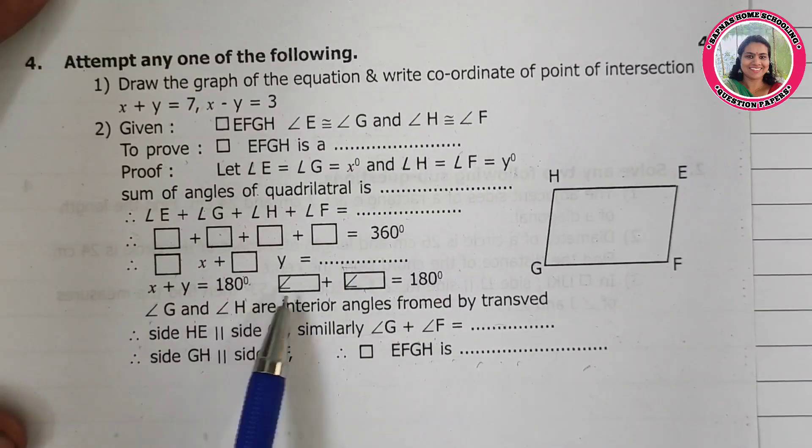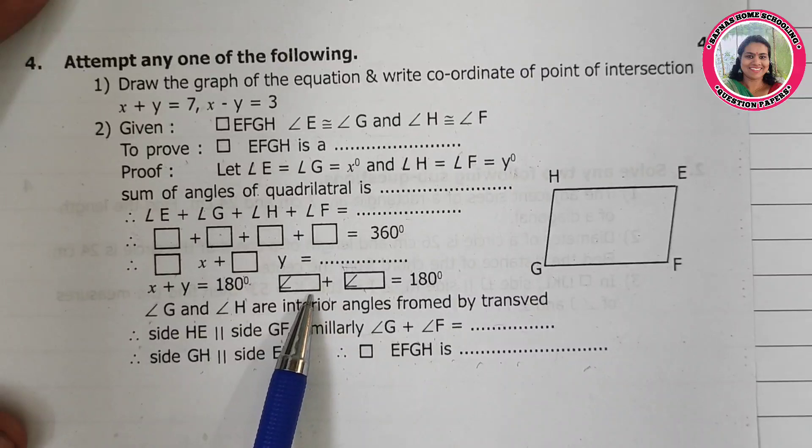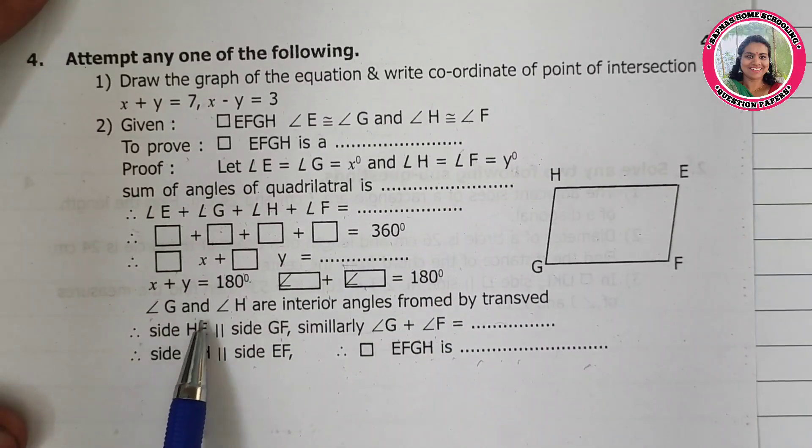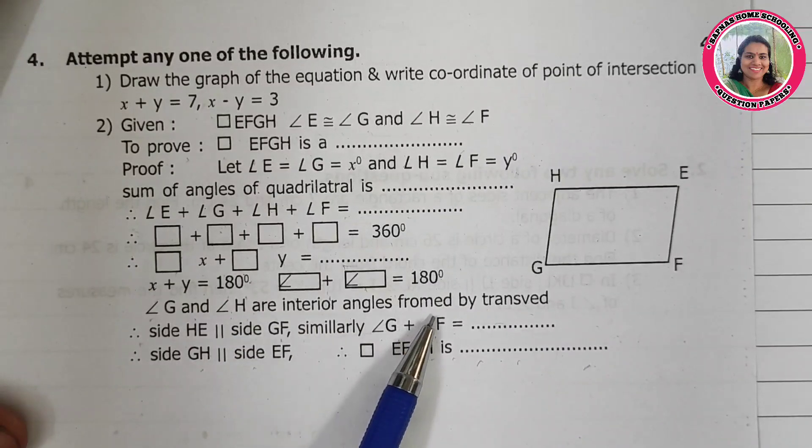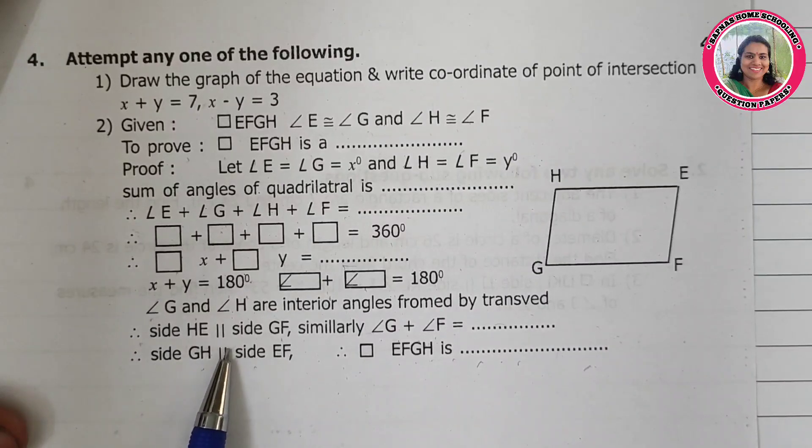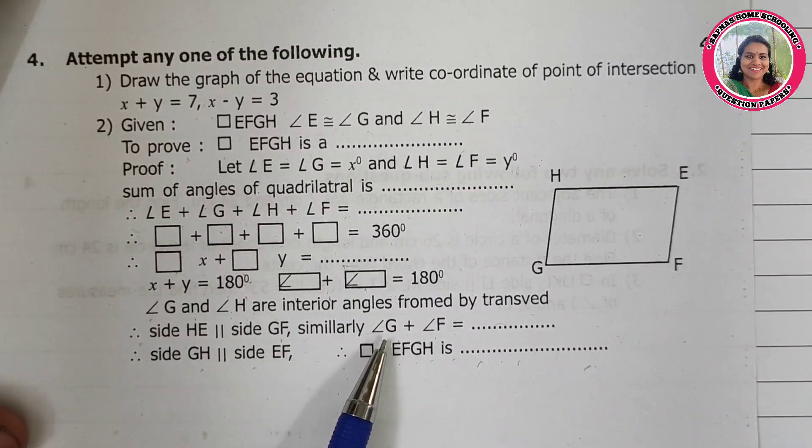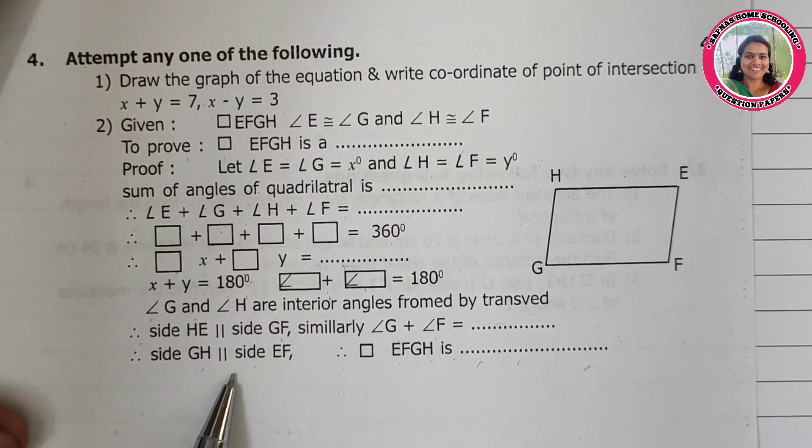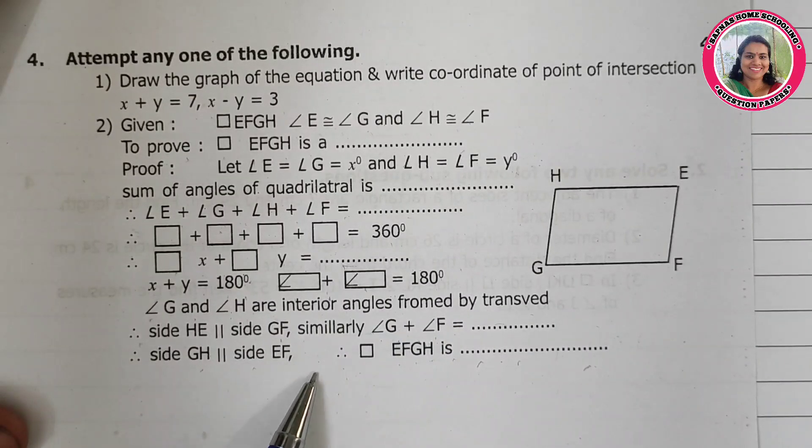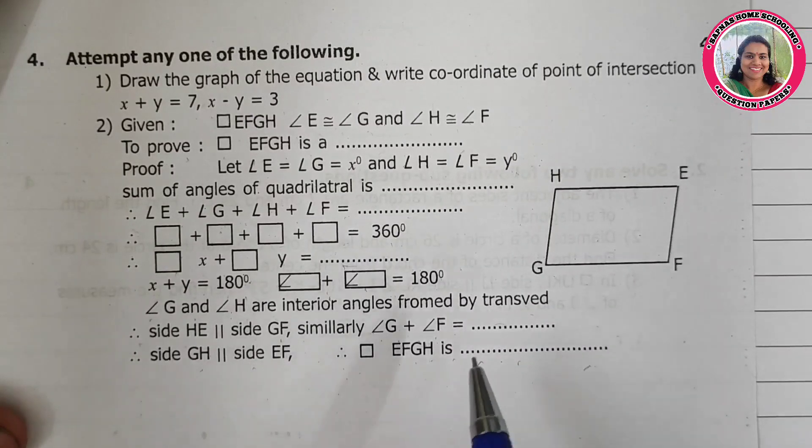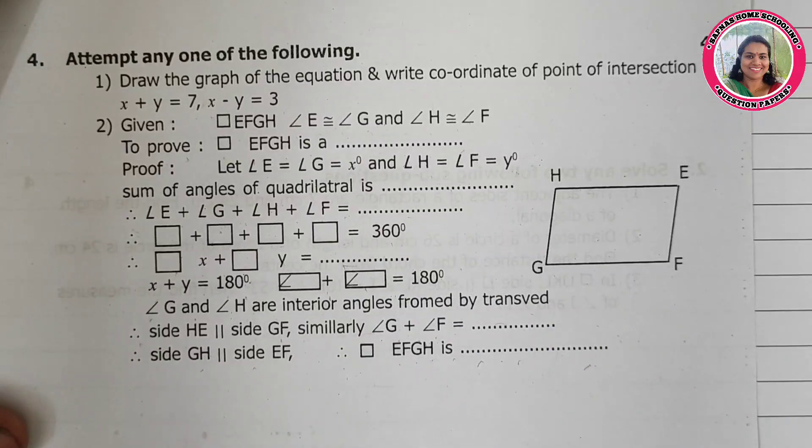So angle E plus angle H equals 180 degrees. Angle G and angle H are interior angles formed by a transversal. Therefore, side HE is parallel to side GF. Similarly, angle G plus angle F equals 180 degrees, so side GH is parallel to side EF. Therefore, quadrilateral EFGH is a [fill in the blank]. You have to just fill in the blanks.